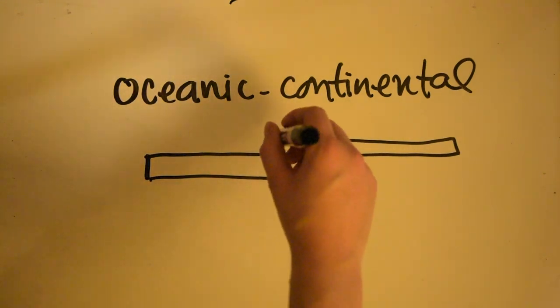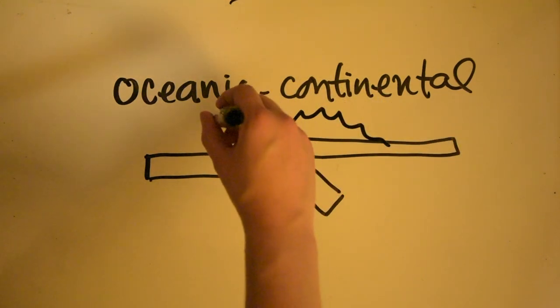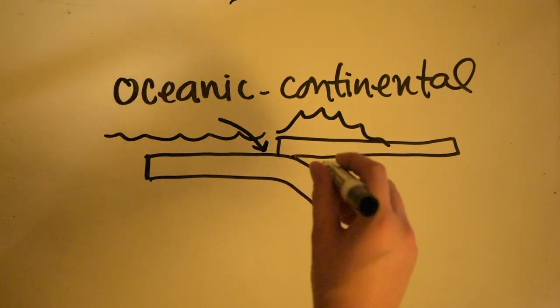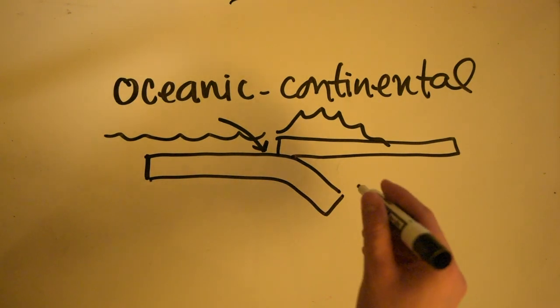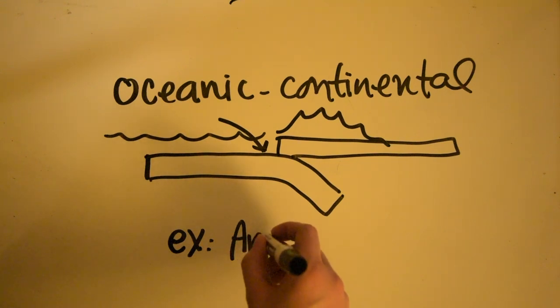So what we see here is usually we'll see mountain ranges and then a really deep trench underneath the ocean here. And so where you see these is along the coasts of continents. An example of this would be the Andes Mountains.